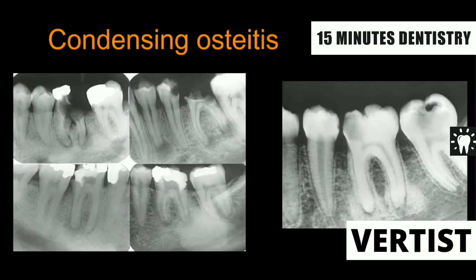This is routinely asked in short notes. Condensing osteitis is seen in chronic periapical lesions, in younger patients, when there is low virulence of the organism and good immunity. There will be a badly carious tooth with periapical abscess, loss of lamina dura, and an irregular-shaped radiopacity surrounding the periapical radiolucency. The size and shape of the radiopacity will be variable.